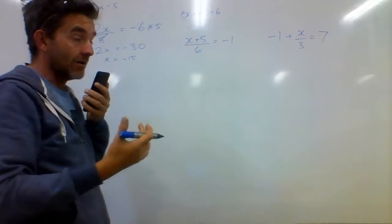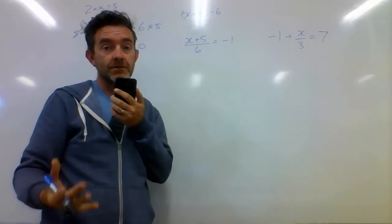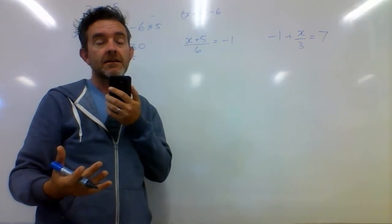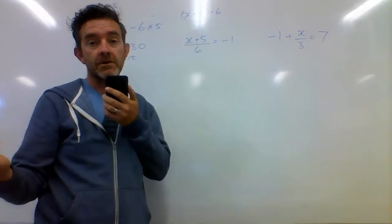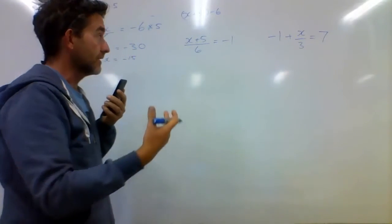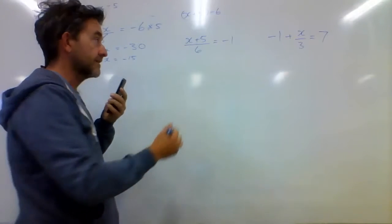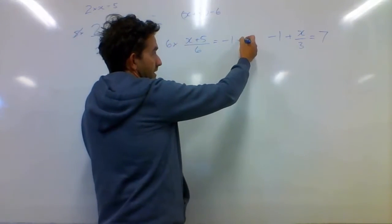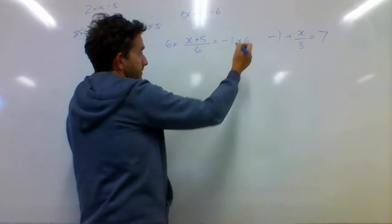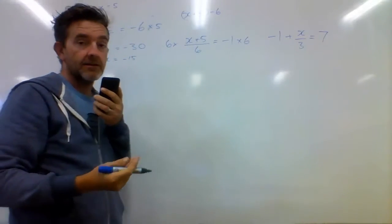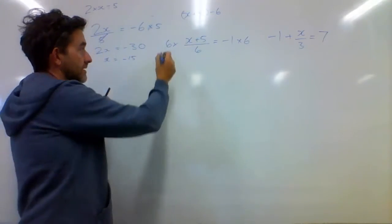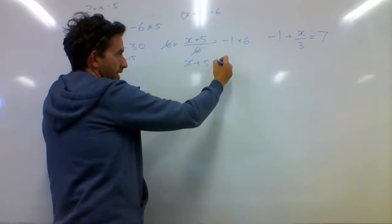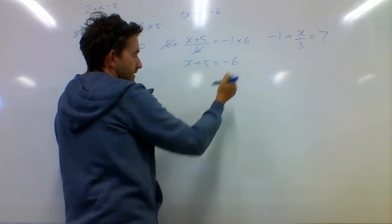So you cannot take away the 5 first and then multiply by 6 — we've got to get rid of that 6 first. The inverse of dividing by 6 is multiplying by 6. 6 times that equals negative 1 times 6. So the 6s will cancel out on the left, and I'm left with x plus 5 being equal to negative 6.